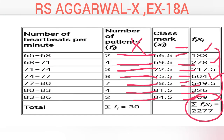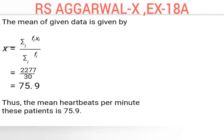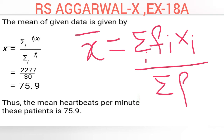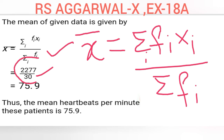Now we apply the arithmetic mean formula. Arithmetic mean, denoted by x-bar, equals summation of fi·xi divided by summation of fi. Putting in the values: fi·xi sum is 2277, divided by 30 (the total number of patients). This gives 75.9. So the arithmetic mean is 75.9 — this is your final answer.